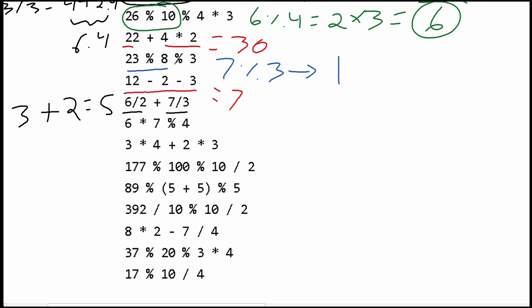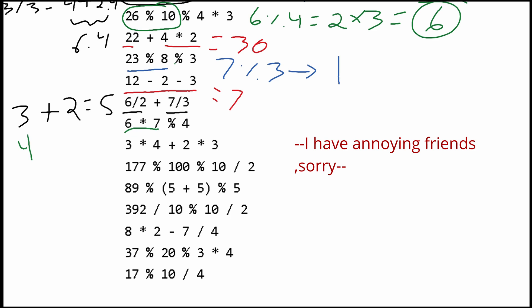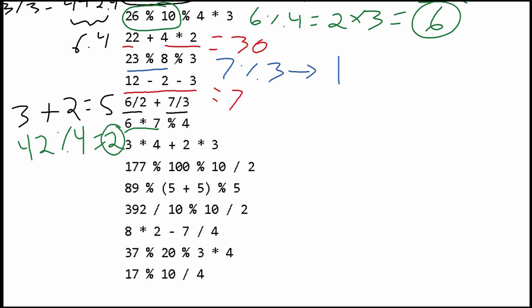Next, we have 6 times 7, which is 42, and we take the modulus of this using 4, giving us the answer of 2. Then we have 3 times 4, which is 12, and we add this to 2 times 3, which is 6. So this answer is going to be 18.